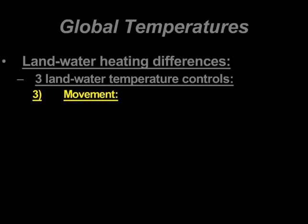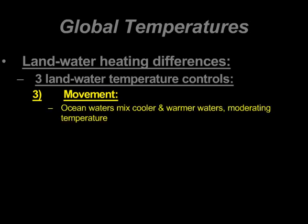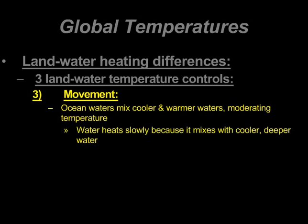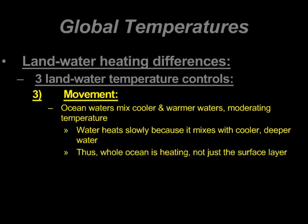The third and final key reason for land and water heating differences is movement. Ocean waters are constantly mixing — cooler waters mixing with warmer waters — helping to moderate temperatures. Water heats slowly because it mixes with cooler, deeper water, with constant blending happening at the surface. Land masses, of course, don't have this effect. While land does move via plate tectonics, there's no equivalent mixing at all.